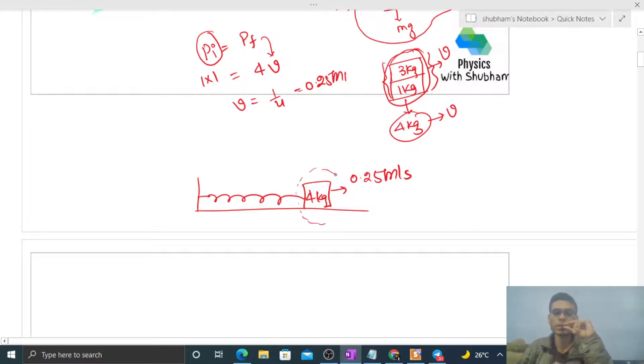So what will be the amplitude of this SHM? Now what will be the amplitude of this SHM? At mean position, this block has speed 0.25.